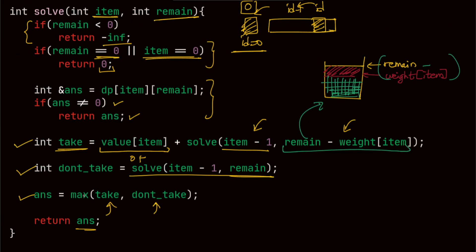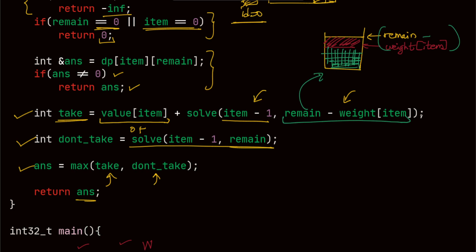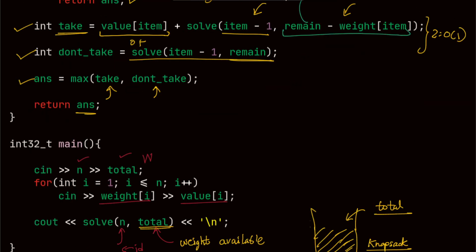This gives us the final answer. The time complexity for this approach: the index can take O(N) values and the capacity can take O(W) values, and transitions are only two — a constant time operation — giving an overall time complexity of O(N × W). That's it about this video. If you found this useful or have any doubts or suggestions, do let me know in the comments. Thank you.